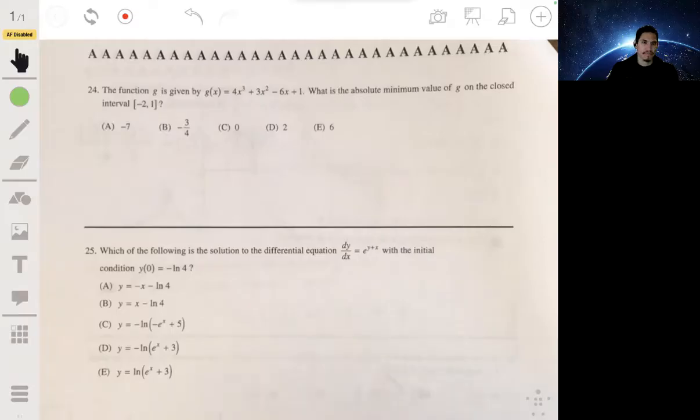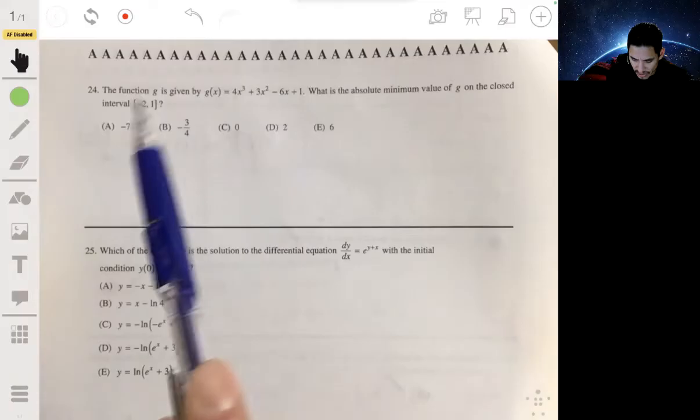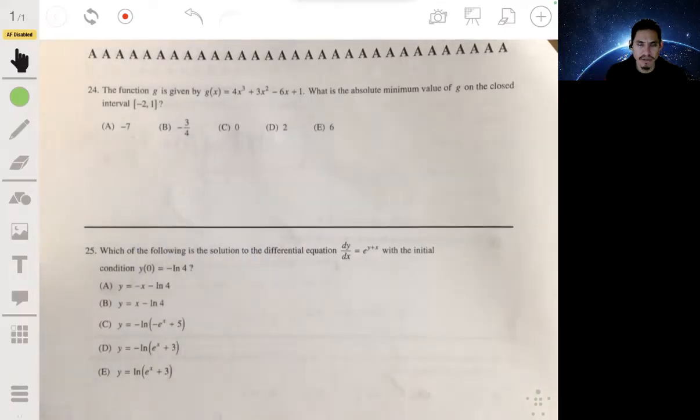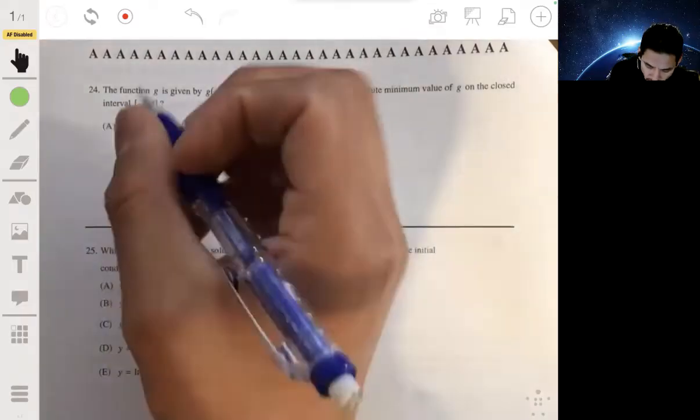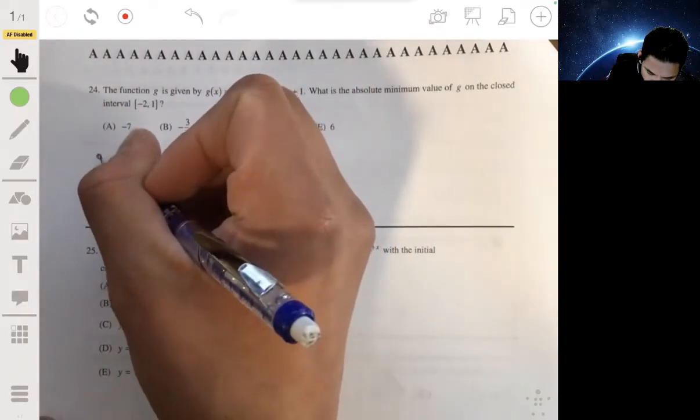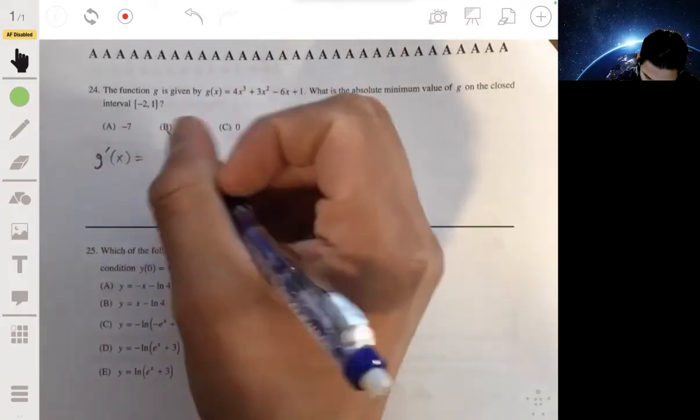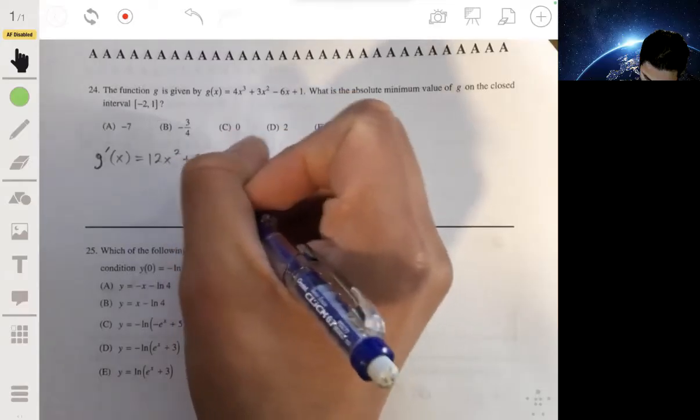This will always work as long as the function is continuous and differentiable. If you want to find the minimum or maximum values, you just take the derivative, find the critical values, and test those derivatives to find what the values of the function are. Sometimes it takes a little more work and it might be faster to use the first derivative test, but if you're not sure what the function looks like, I just recommend going this way.